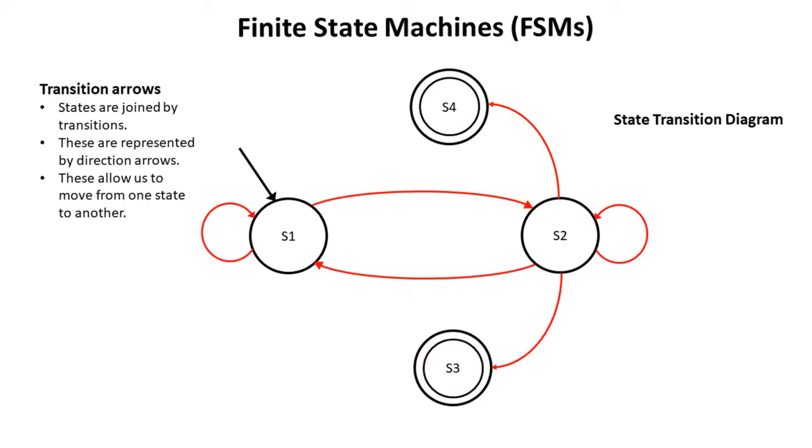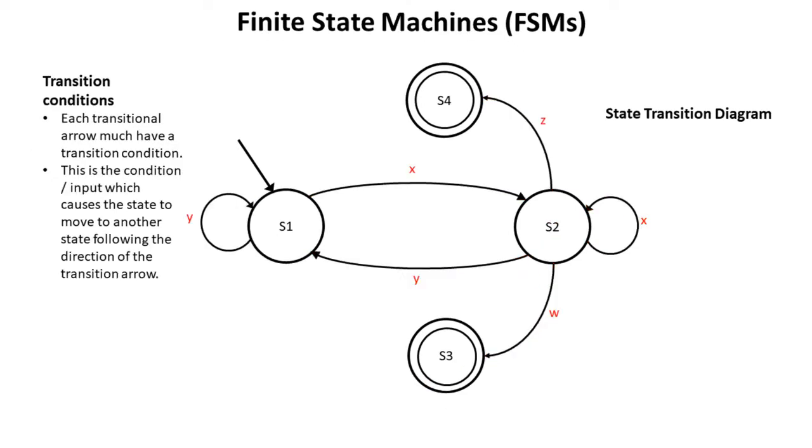We then have transition arrows and these join the various states together. These are represented by directional arrows and this is what allows us to move from one state to another. Each transition arrow must have a transition condition. Here we've just labeled them as X, Y and Z. This is the condition or the input which causes us to move from one state to another following the arrow.